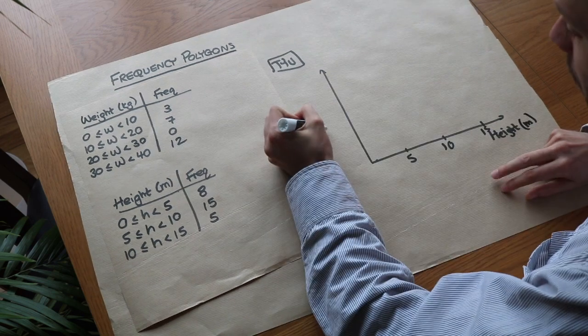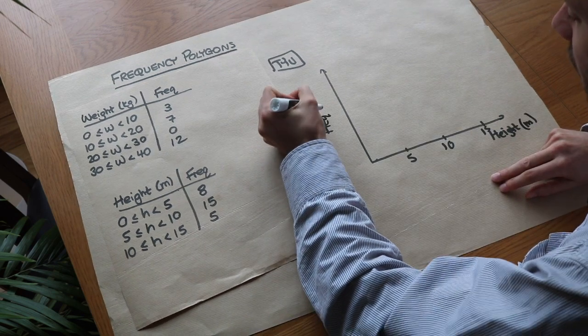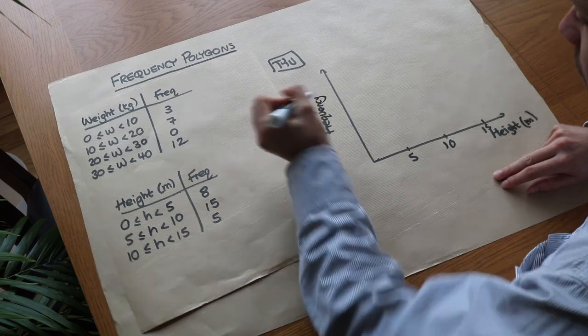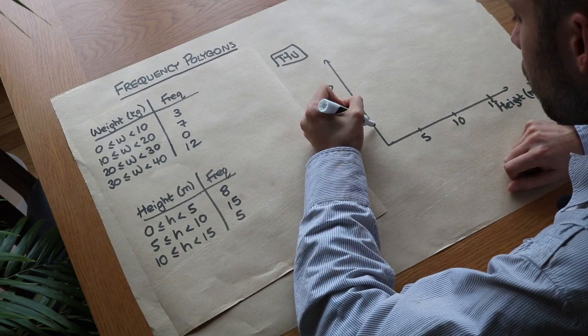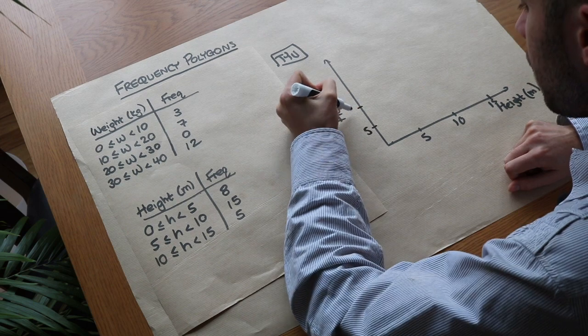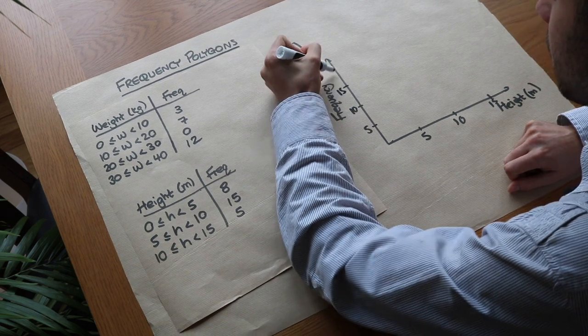And we want the unit for height—it's meters. And then we've got the frequency axis as the y-axis, and we're going up to 15, so we could do 5, 10, and 15 again, or I could go up to 25: 10, 15, 20.